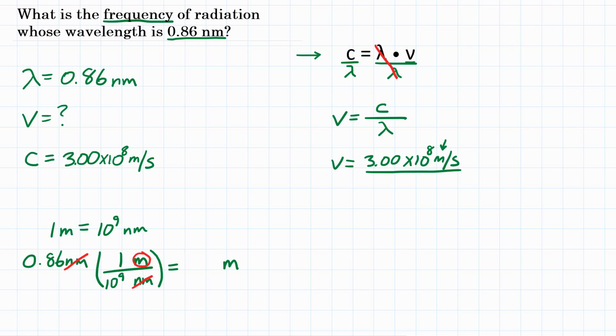So if we do the math here, you're going to do 0.86 times the top of the fraction divided by the bottom. The top of the fraction is just 1, so it won't actually change the math. So we'll just do 0.86 divided by 10 to the ninth. And for scientific notation, we would get 8.6 times 10 to the negative 10 meters.